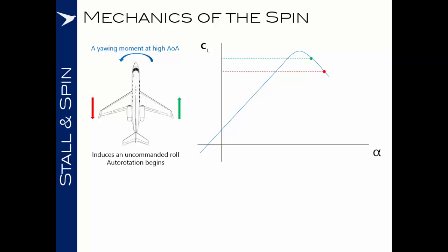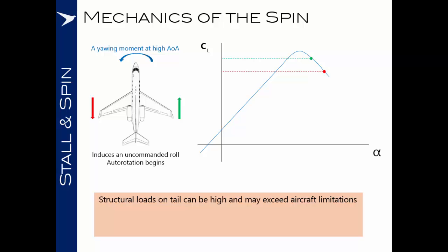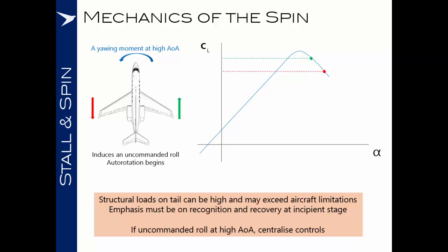I'm not going to labour the full dynamics of the spin, because in most transport aeroplanes the structural loads on the tail can be very high and may exceed aircraft limitations. What I really want to emphasise is that we must work on recognition and recovery at an incipient stage. If you experience an uncommanded roll or yaw at a high angle of attack, centralise the controls as the first action and work to reduce your angle of attack.